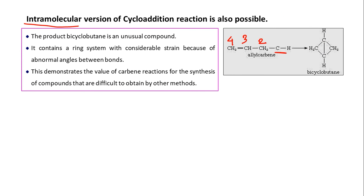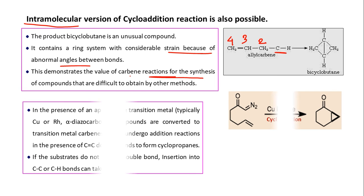The product bicyclobutane is a really unusual compound, but it can be made by this method. It is a concentrated ring system with considerable strain because of abnormal bond angles. This demonstrates the value of carbene reactions for the synthesis of compounds that are very difficult to obtain by other methods, but which can be made easily using carbene cycloaddition.